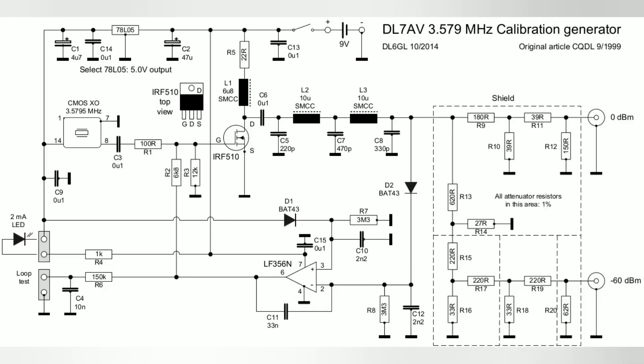This is the DL7AV calibration generator as built by DL6GL. You can see it has a 3.5795 megahertz crystal oscillator here. It runs off a 9 volt battery. It has a 5 volt regulator.